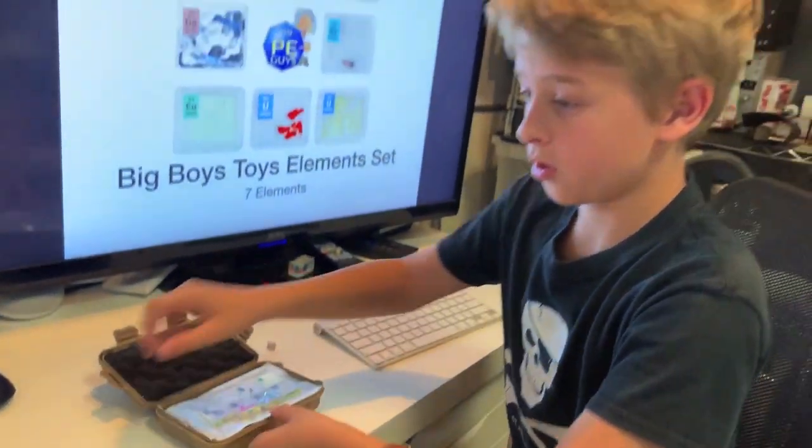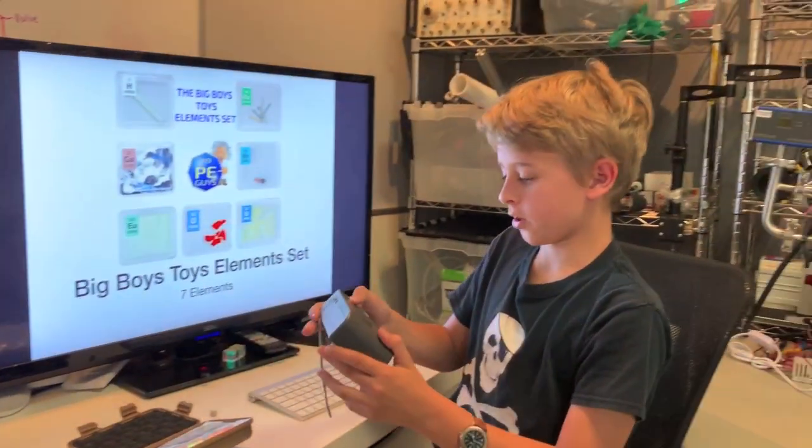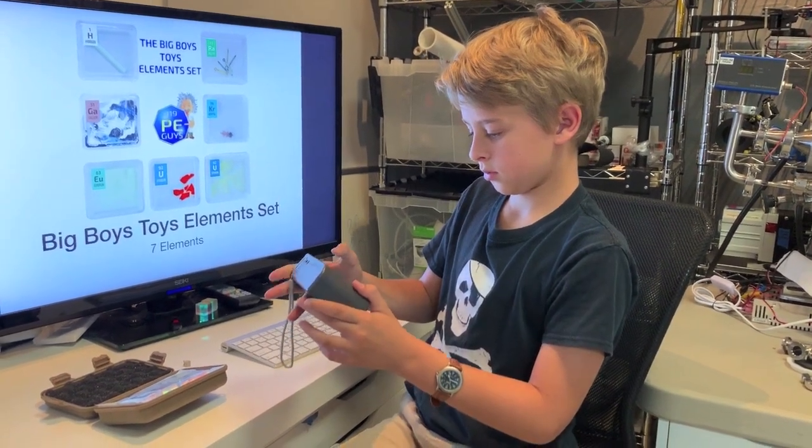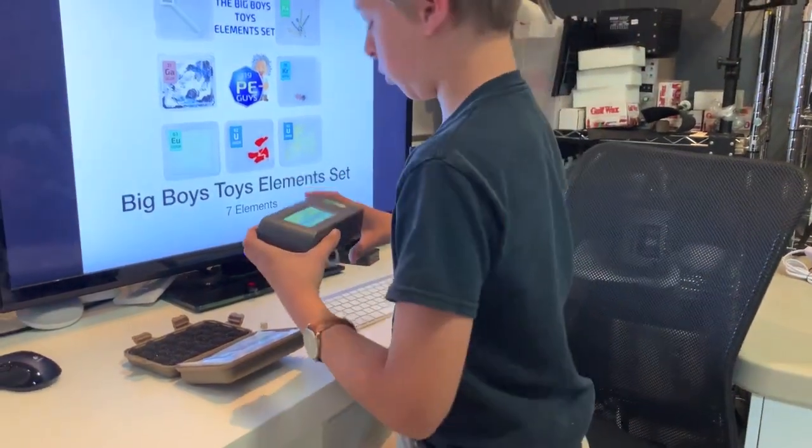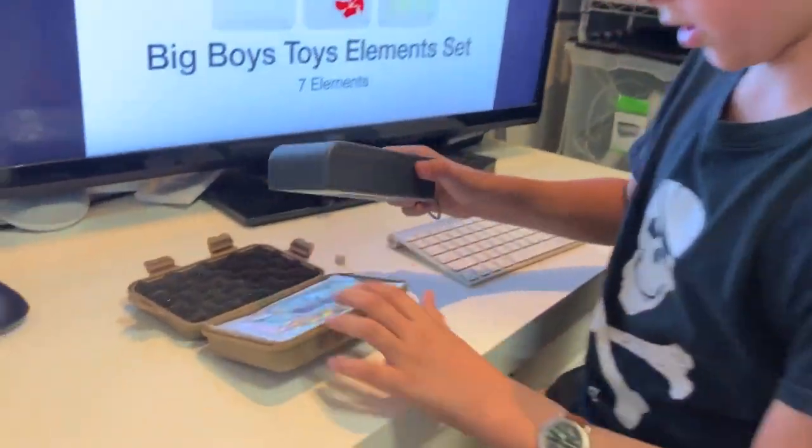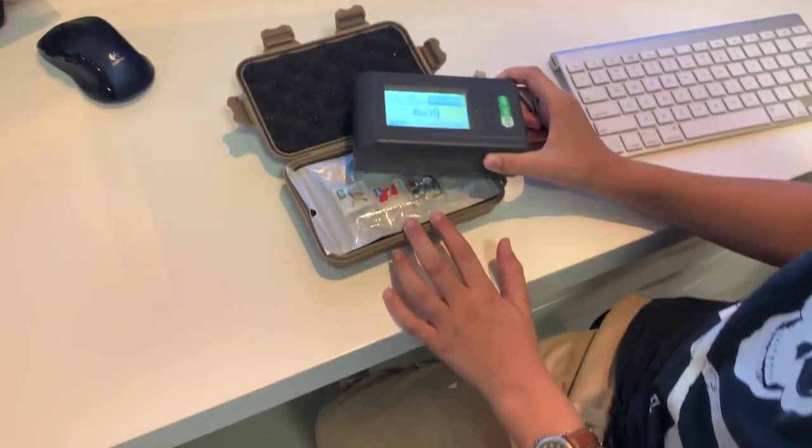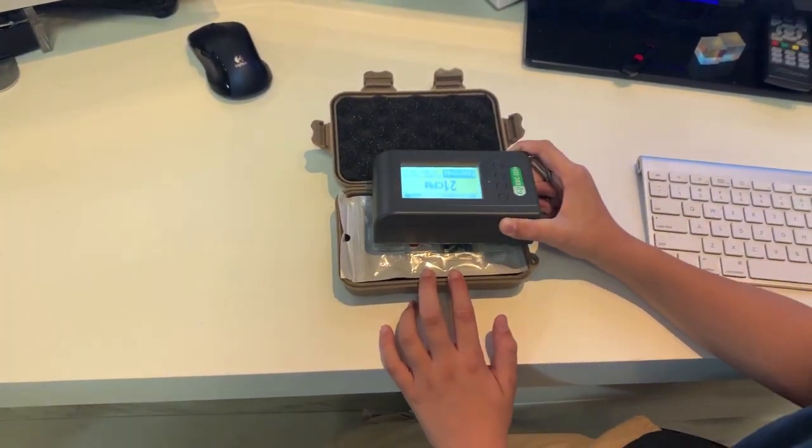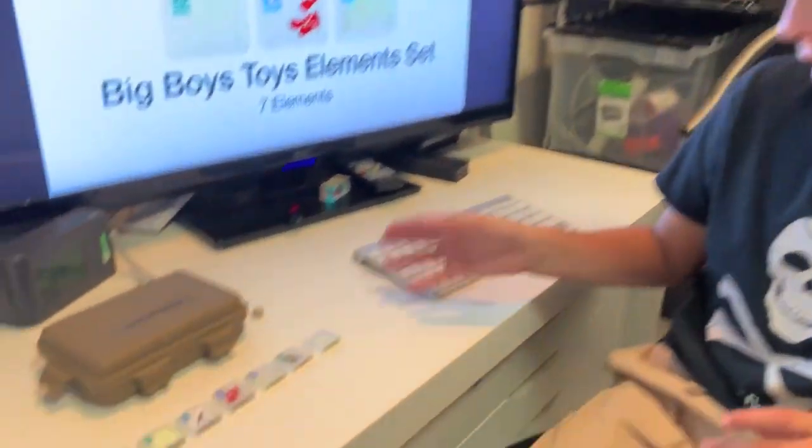Now we're going to see if they're radioactive with our Geiger counter. This is a GMC-600 Plus, very sensitive to alpha particles since it's got the alpha collector. Now that we got them all laid out in line, you can pan over them.